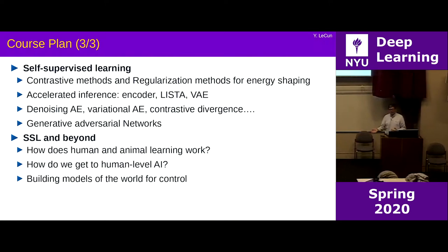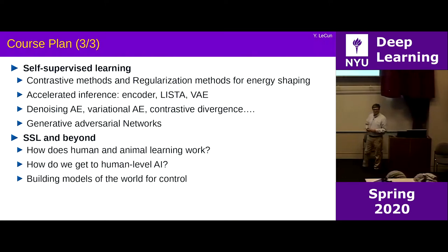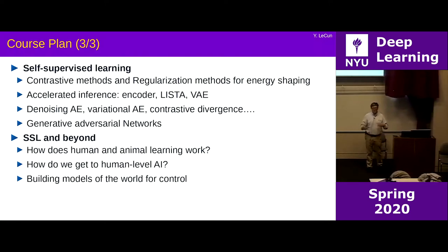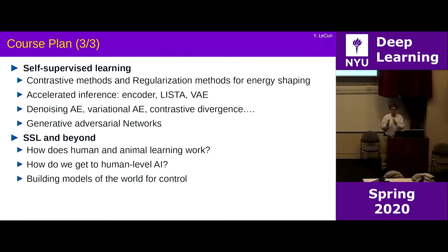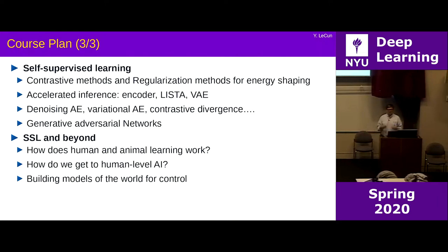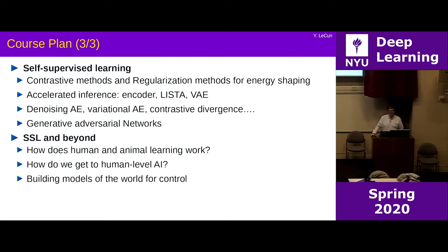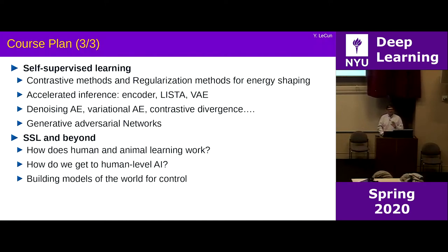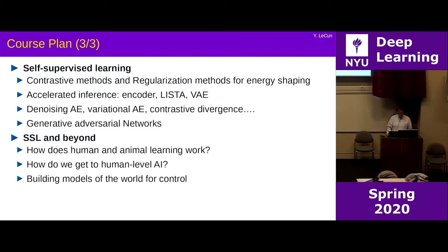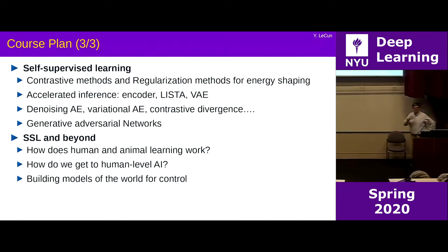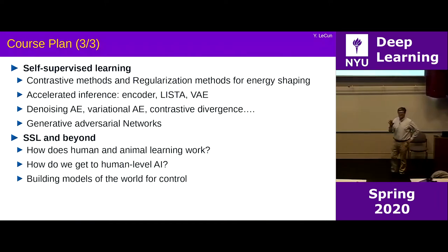Then there is self-supervised learning and beyond: how do we get machines to really become intelligent? They're not very intelligent right now — they can solve very narrow problems very well, sometimes with superhuman performance, but no machine has any kind of common sense. The most intelligent machines we have probably have less common sense than a house cat. How do we get to cat-level intelligence first, then maybe human-level intelligence? I don't pretend to have the answer, but there are a few interesting ideas to discuss.